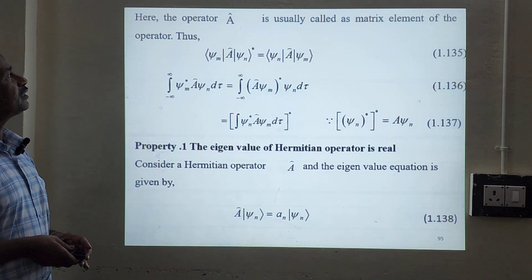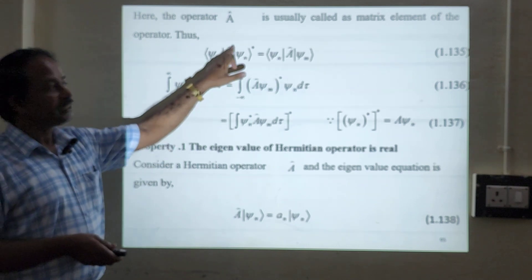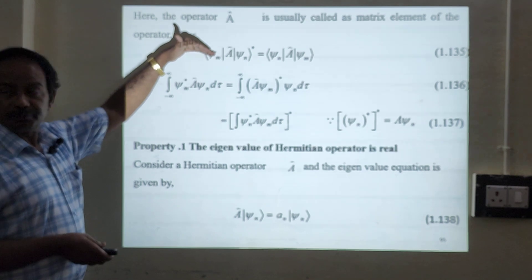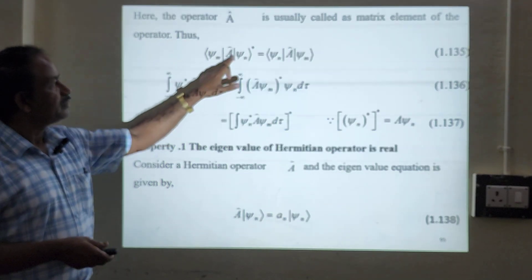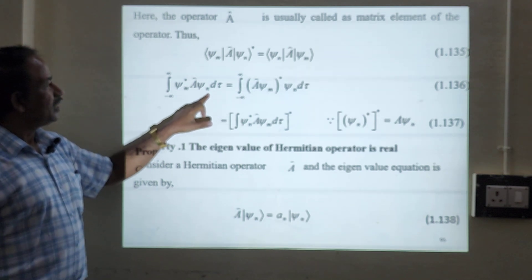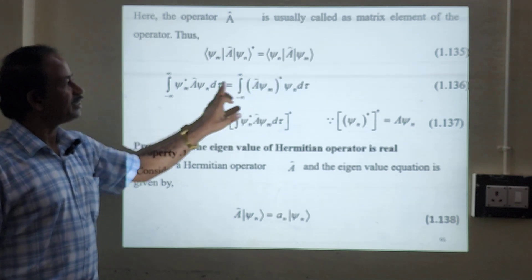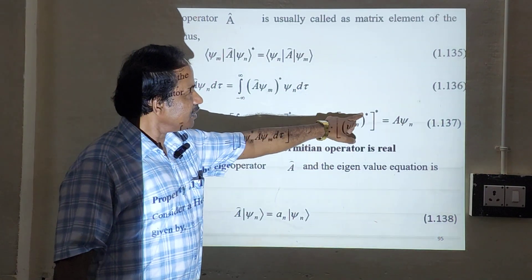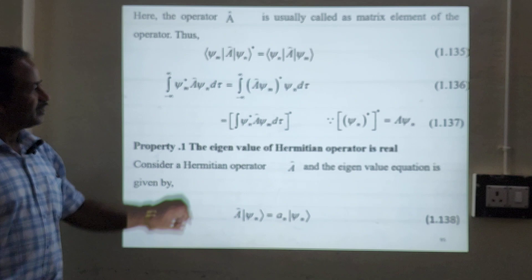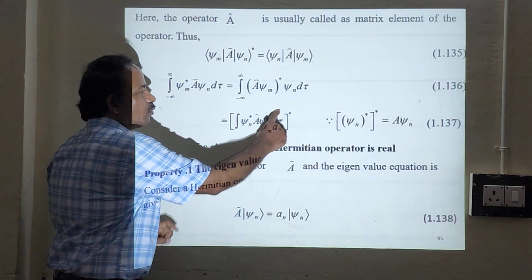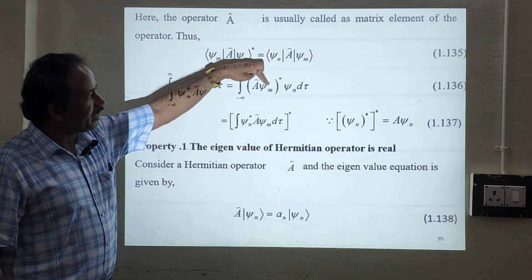The operator A is called the matrix element of the operator. Taking psi_m sandwiched with A and psi_n, and then the complex conjugate gives: the integral of psi_m* A psi_n dx. We can rewrite this as (A psi_m)* times psi_n, and since (psi_n*)* = psi_n, we can write this in the equivalent form. Now we are going to learn two important properties that often appear in examinations.